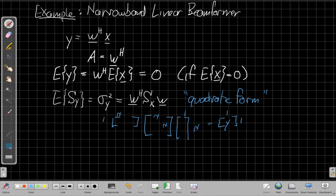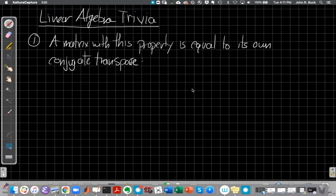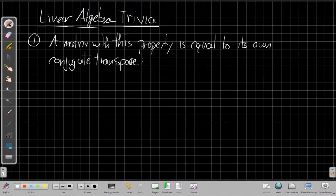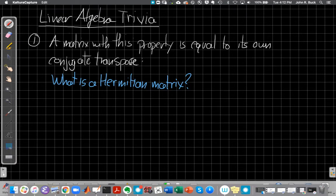Okay. And so let's finish with two important pieces of vocabulary about covariance matrices. And then I'll go on to some examples in the next video. So the first one, if you find yourself in the wrong trivia night at the wrong pub, you may end up in linear algebra trivia. The first one is a matrix with this property is equal to its own conjugate transpose. Pause the video for a second. Try to remember what that's called.